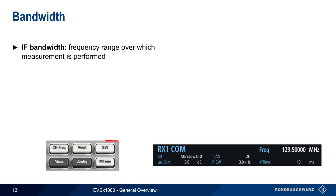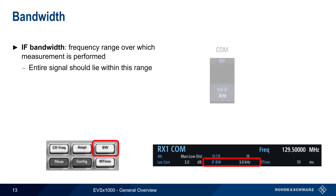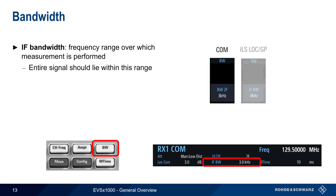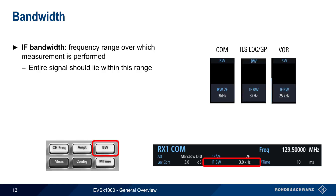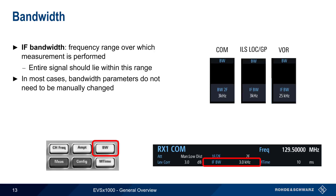Another general parameter is IF bandwidth, which is the frequency range over which measurements are performed. All spectral components of a signal should lie within this range. For example, most avionics COM signals will have a maximum bandwidth of 3 kHz, and the same is true for ILS localizer and glide slope signals. VOR signals, on the other hand, require a bandwidth of 25 kHz to correctly measure all signal components. That said, bandwidth parameters usually do not need to be manually changed, since they are automatically set to the appropriate value in each measurement mode.